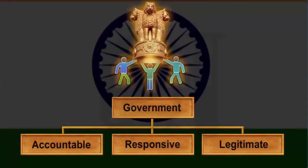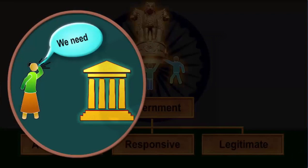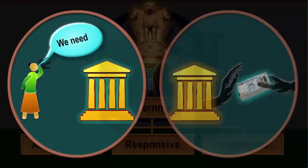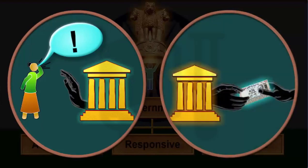Let's look at the second factor of political outcome: responsiveness. We expect a government to be attentive to our needs and wants and to be free of corruption. So, how do most democracies fare on this outcome? Democracies often ignore the needs and wants of their citizens. Moreover, corruption is a rampant evil in most places.